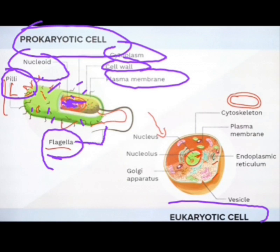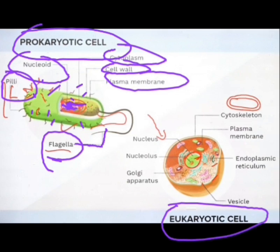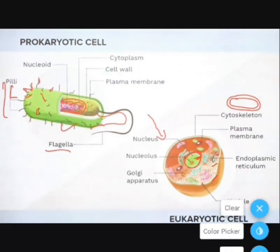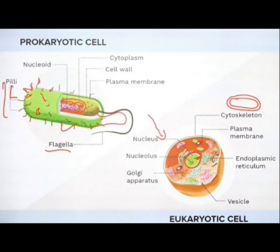Now let us talk about the eukaryotic cell. It has a defined nucleus, as you can see here. Inside this nucleus, the nucleoid — or the genetic material — is found.